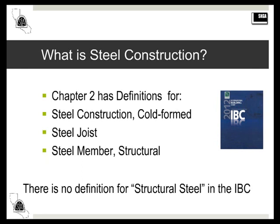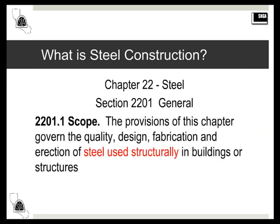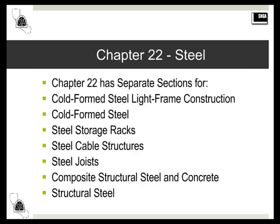That's kind of a definition by exclusion, and there's no definition of structural steel. Maybe in Chapter 22? Chapter 22, Steel, says in the Scope section 2201.1 that it governs the design, fabrication, and erection of steel used structurally. This is a nice general term, but what does it mean? If you've looked at IBC Chapter 22 recently, you'll notice it's very short — just three pages — because everything: design, fabrication, and erection, is referenced to other national standards.